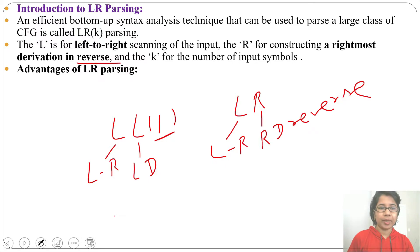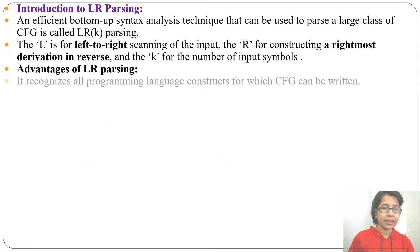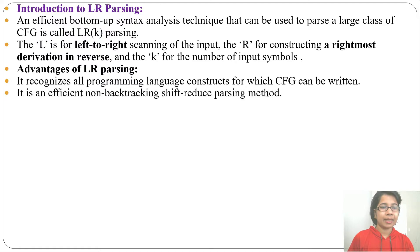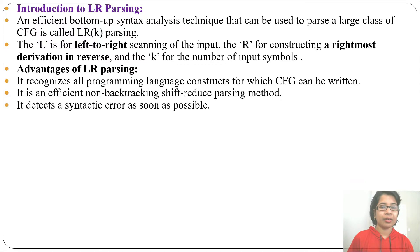What are the advantages of LR parsing? First advantage: it recognizes all programming languages for which a context-free grammar can be written. Second advantage: it is an efficient non-backtracking shift-reduce parsing — shift-reduce parsing is a general type of bottom-up parser. It also detects syntax errors as soon as possible, faster than top-down parsing.